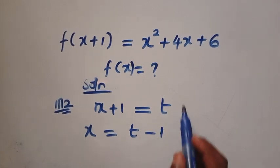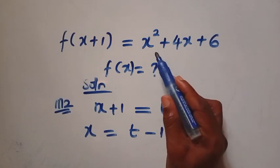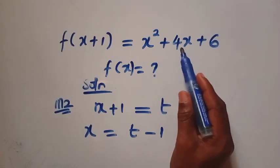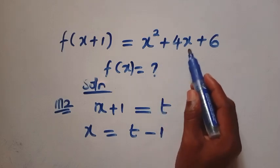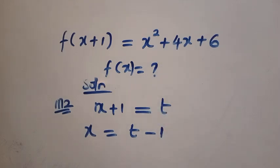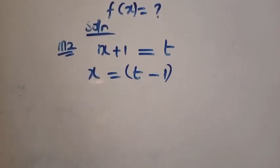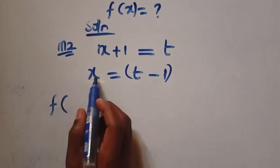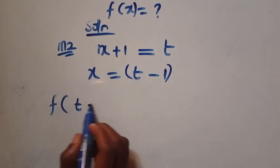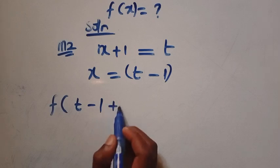And from the right-hand side, we have x squared plus 4x. We need to have our x squared and we need to have our 4x. So if I try and substitute this t minus 1 into this equation,